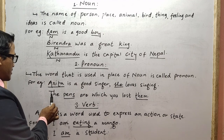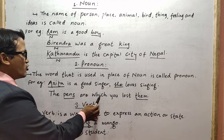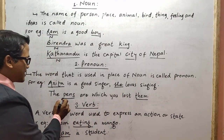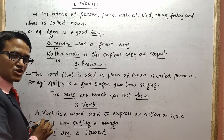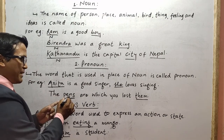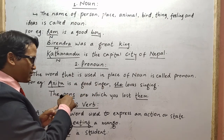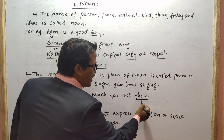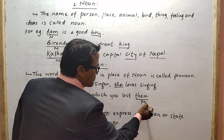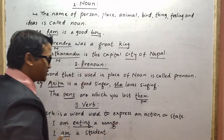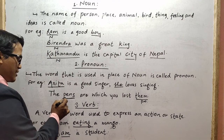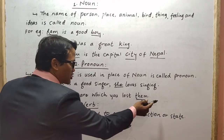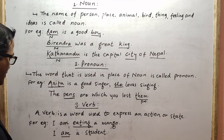Likewise, consider: 'The pens which you lost — them.' Here the noun is 'pens,' and 'them' is used in place of pens. Since pens is plural, 'them' is also plural, third person. That is why 'them' is used as the pronoun here.